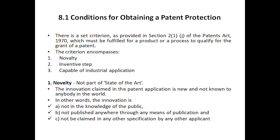You have to make sure the product is something new — below that you will not get a patent. The basic criteria are: it has to be novel, it has to have an inventive step, and it has to be capable of industrial application. These criteria are provided in Section 2(1)(j) of the Patent Act 1970, which must be fulfilled for a product or process to qualify for the grant of a patent.